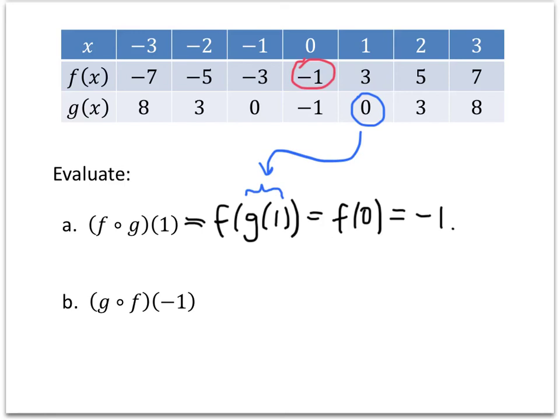Let's do part b real quick. G composed with f of negative 1. That's g of f of negative 1. What's f of negative 1? Well, f of negative 1 is negative 3. So this is g of negative 3. And then g of negative 3, that's 8. And so that's our answer.